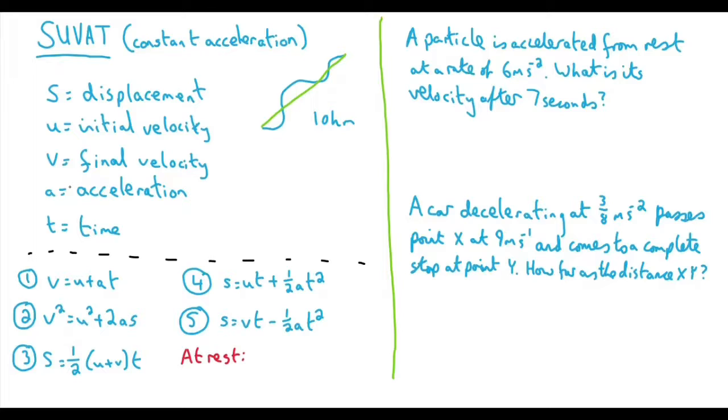Say you had an answer to part A which you could in theory use in part B. I personally wouldn't use that answer if you have the choice, just in case you made a mistake. You would maybe still get error carried forward, but you want to minimise the risks. Using the numbers they've given you, you know you're using the right numbers.